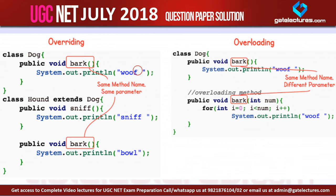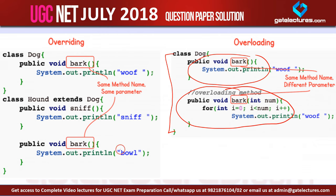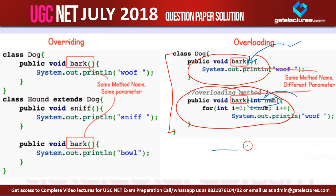In case of method overloading, within one class we create two methods, but these two methods differ only by their signature. For example, one method takes no input argument and another takes one integer as an input argument — so their signatures are different. In case of method overloading, within a class we can create two methods with different signatures. Whenever we call these methods, we pass some parameters, and according to the kind of parameters passed, it is decided which method will be called.